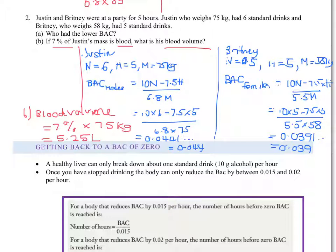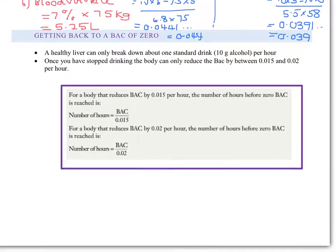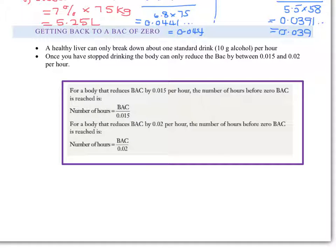If you're at a party and you're on your P's, you can't have any alcohol in your system. Say you do have a drink and still need to drive home - how can you get your blood alcohol content back to zero? I hate to be the bearer of bad news, but there's no quick and easy way. Mathematically, we can say that a healthy liver can only break down about one standard drink, 10 grams of alcohol per hour. Once you've stopped drinking, the body can only reduce BAC by between 0.015 and 0.02 per hour.